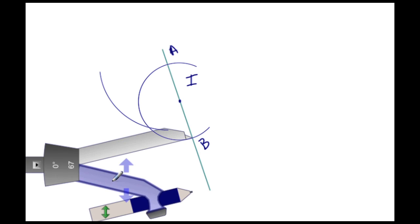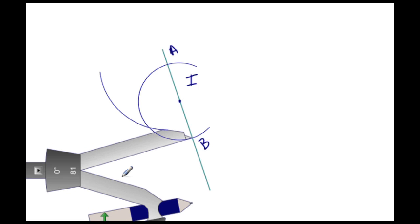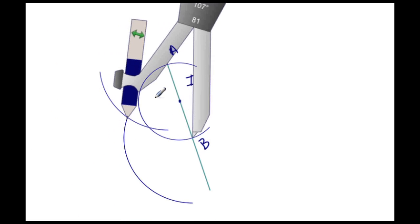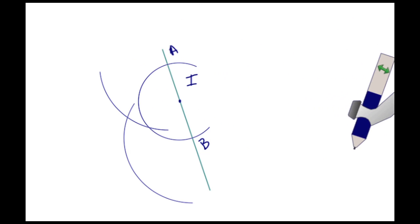And again draw another arc, and again we're looking for the intersection. Once we get that intersection, we're going to now take our straight edge tool.